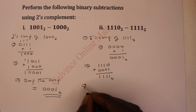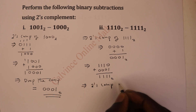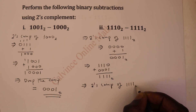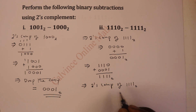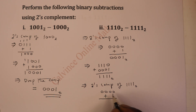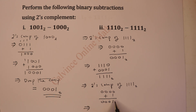The next step is to get the two's complement of the result, which is 1, 1, 1, 1. Inverting gives 0, 0, 0, 0, and then adding 1 gives 1, 0, 0, 0. The final answer is this value with a negative sign, so the answer is minus 0, 0, 0, 1 base 2.